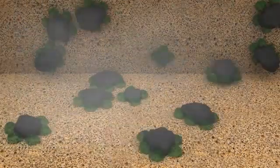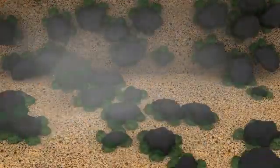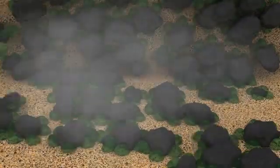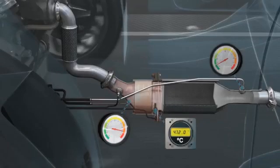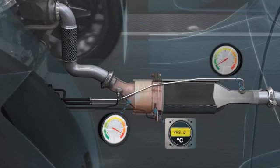When the amount of particles held back in the filter reaches a certain level, the differential pressure sensor sends a signal to the electronic control unit to start the filter regeneration process.